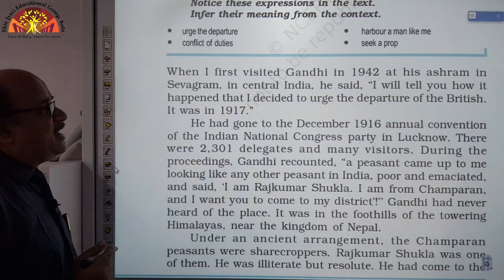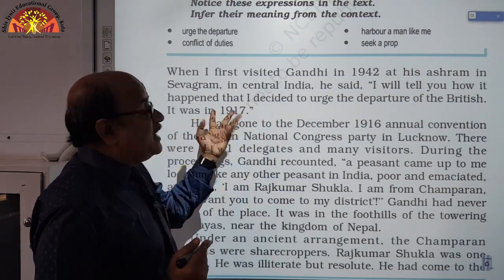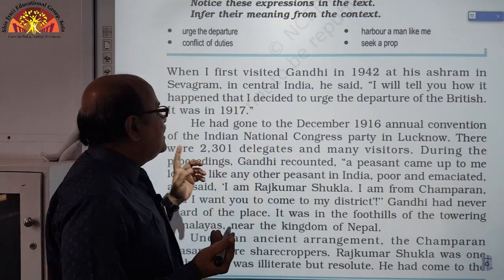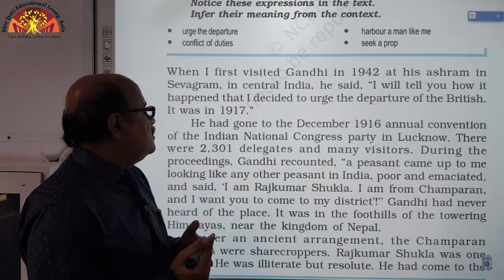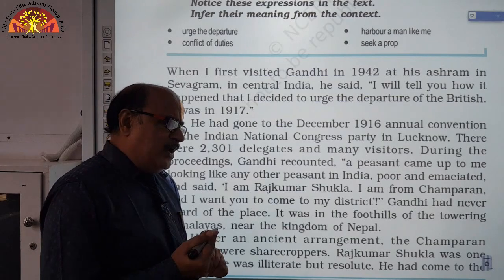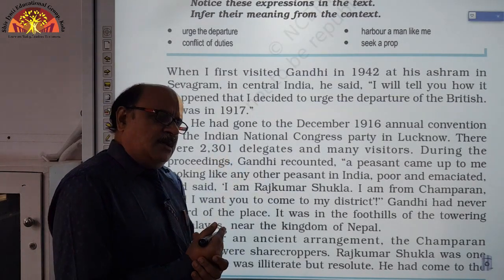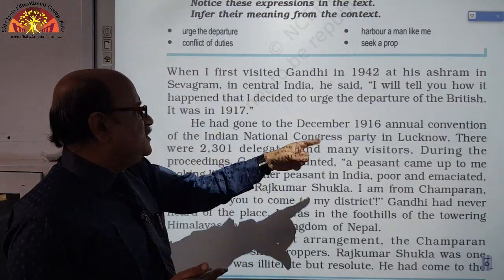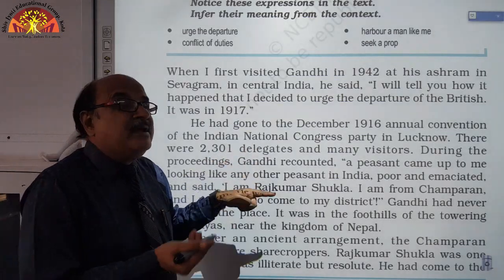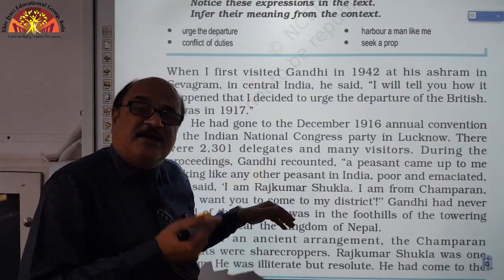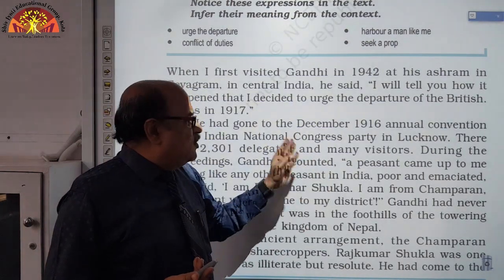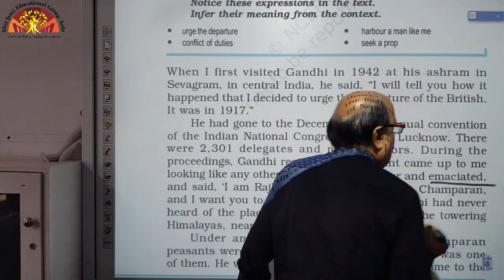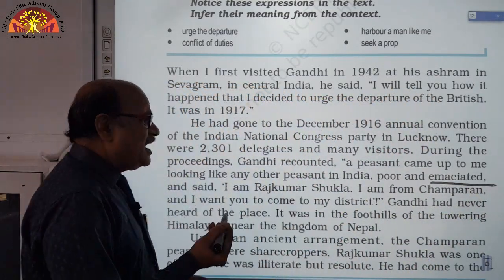Shukla said: 'I will tell you how it happened that I decided to urge the departure of the British. It was in 1917.' For the very first time, Rajkumar Shukla met Gandhi in 1917. Gandhi had gone to the December 1916 annual convention of the Indian National Congress party in Lucknow, where 2,301 delegates — big dignitaries — had attended. Gandhi recalls: 'A peasant came to me looking like any other peasant in India — poor and emaciated, quite thin and weak, as almost all Indian farmers were.'